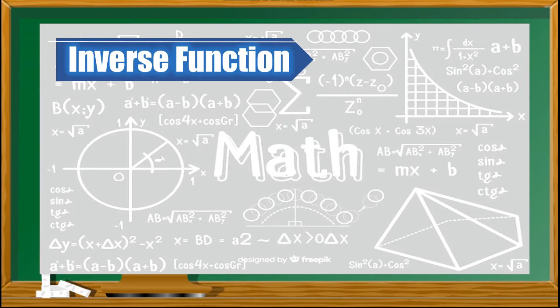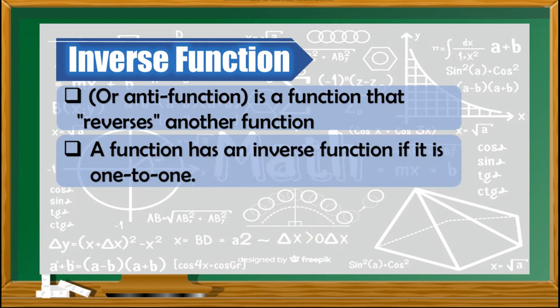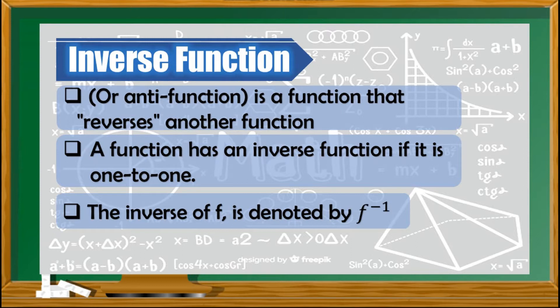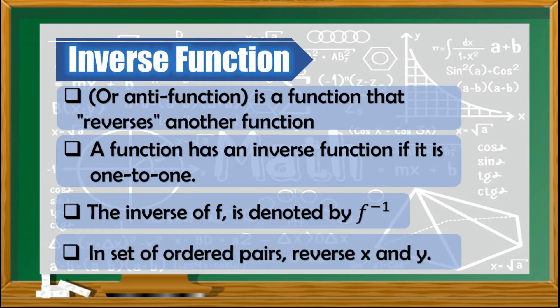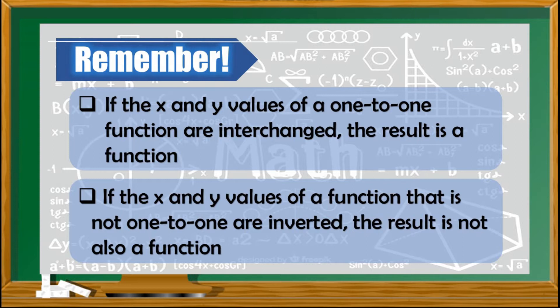Let us now have its definition. When we say inverse function, it is also called an anti-function, and it is defined as a function that reverses another function. A function has an inverse function if it is one-to-one. The inverse of f is denoted by f raised to negative one, or read as f inverse. In a set of ordered pairs and also in a table of values, all we need to do is reverse the x and y values. Always remember that if the x and y values of a one-to-one function are interchanged, the result is a function. And if the x and y values of a function that is not one-to-one are inverted, the result is not a function.